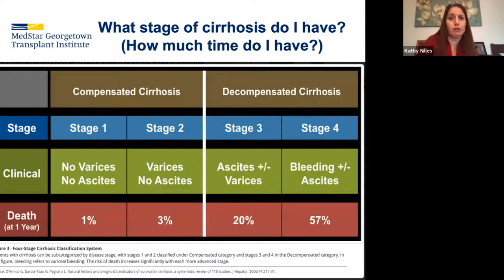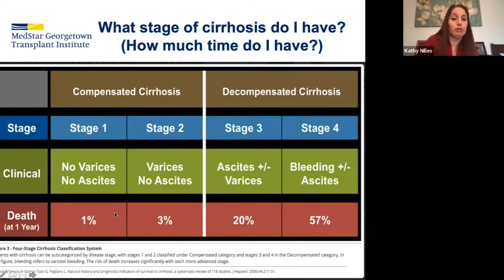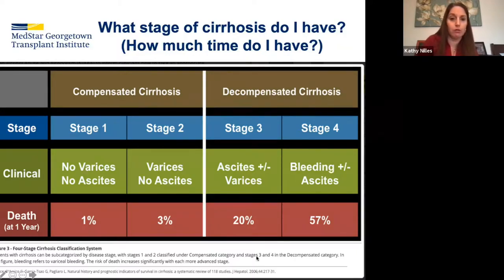Patients always ask in clinic what stage of cirrhosis they have — really what they mean is how much time do they have, what's their survival. We don't usually use this staging system much, but it can be helpful to explain the difference between compensated and decompensated cirrhosis. Stage 1: no varices, no ascites — 1-year mortality 1%. Stage 2: varices that have not bled with no ascites — 3%. Stage 3 (decompensated): varices and ascites — 20%. Stage 4: bleeding with or without ascites — 57% mortality.